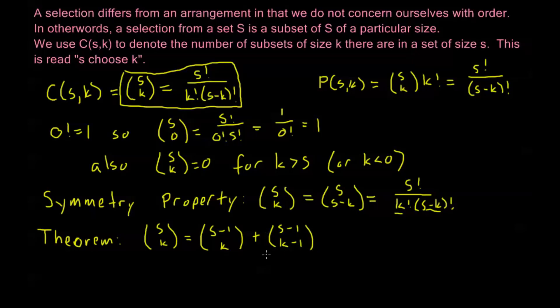Now we can think of this intuitively as well. What we can say is well I'm looking at a set of size S and I want to know how many ways there are for me to choose K of those objects. So let's consider one of those objects. Let's call it A. This object A in this set S.